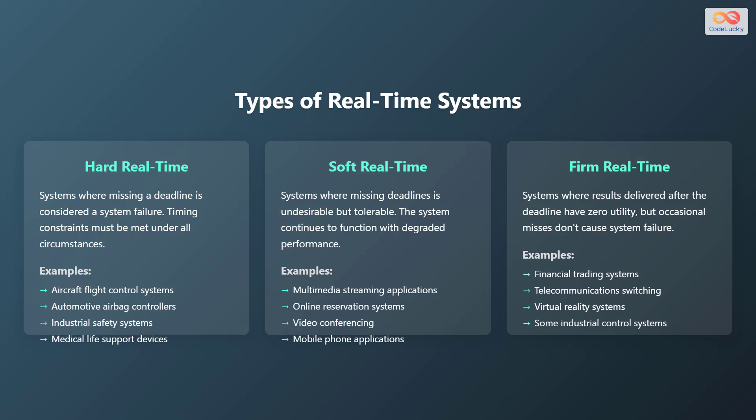Then, there are firm real-time systems, where results delivered after the deadline have zero utility, but occasional misses don't cause system failure. Examples include financial trading systems, telecommunication switching, virtual reality systems, and some industrial control systems.